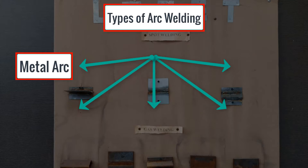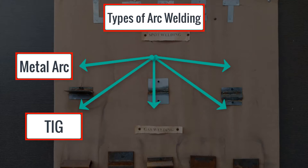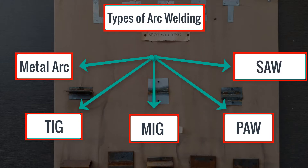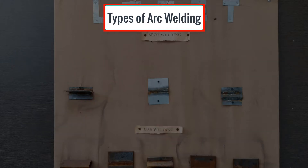In arc welding, arc is generated. Arc is nothing but a bundle of energy. The different types of arc welding are: metal arc welding, tungsten inert gas welding (TIG welding), metal inert gas welding (MIG welding), plasma arc welding (PAW), and submerged arc welding (SAW). All these types are under the category of arc welding, where arc is generated as a bundle of energy.